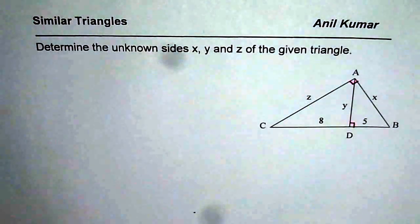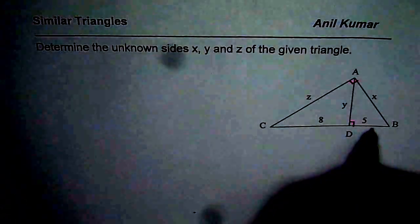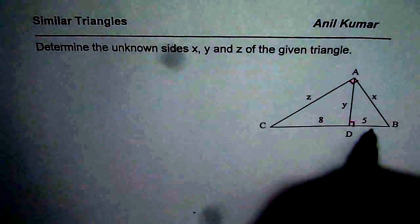I am Anil Kumar sharing with you some interesting questions which involve right triangles, similar triangles, and the theorems which we did on geometric mean. The question here is to determine the unknown sides x, y, and z for the given triangle. I will also give you a link for those theorems so that you can understand this topic better. Now let us begin by solving this particular triangle using similar triangle techniques.